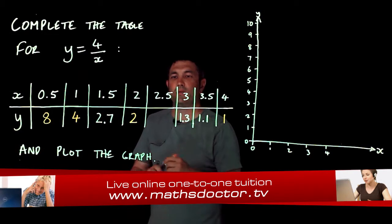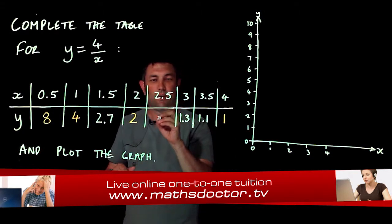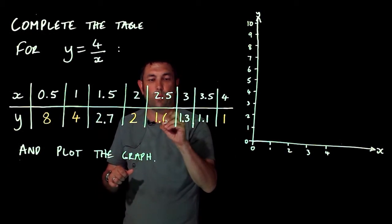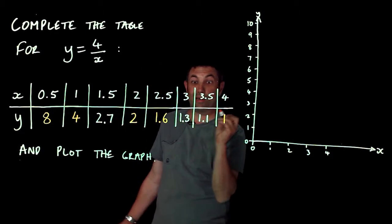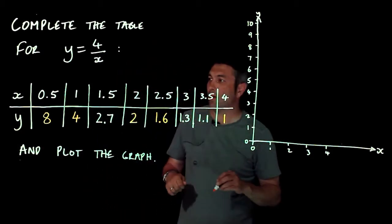Now 2.5 isn't very nice, I'd use my calculator for that, and I end up with 1.6. Now I've done it to one decimal place because everything else is done to one decimal place.